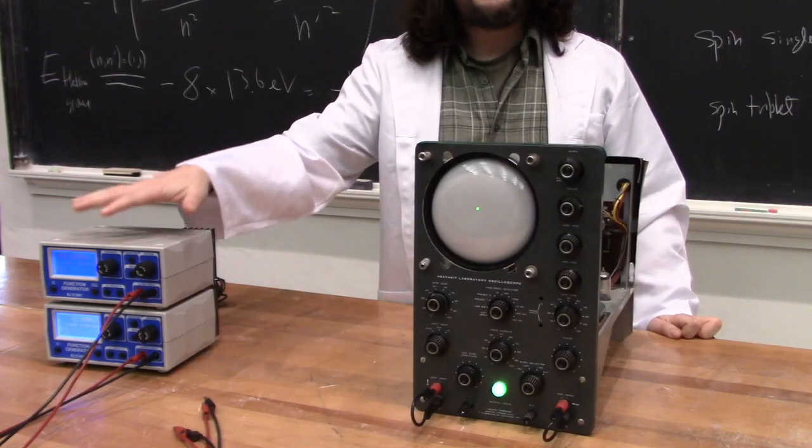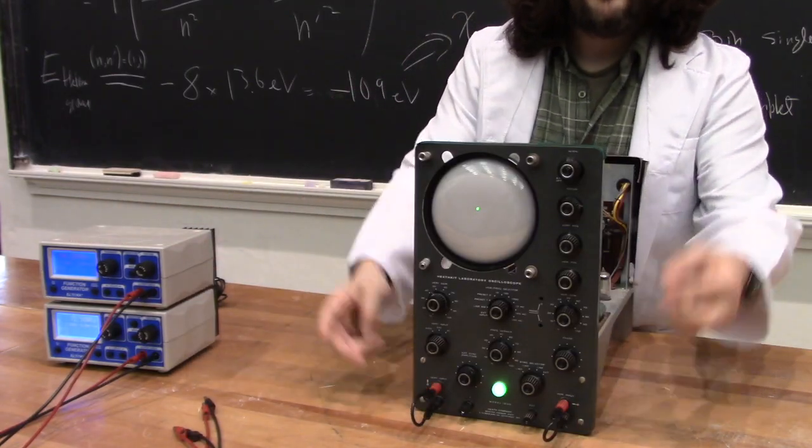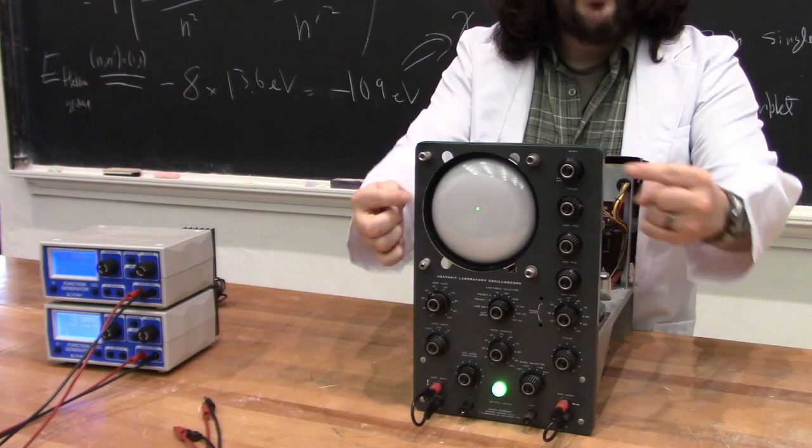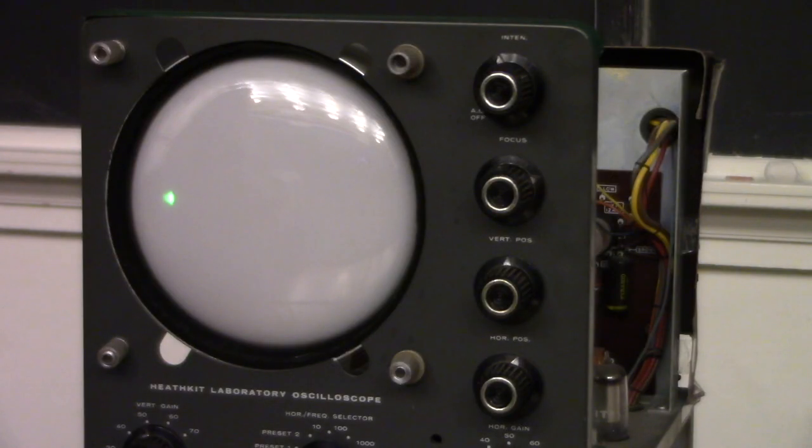Now I'll plug these signal generators into the oscilloscope's front panel, so we can control the electron beam directly. I can tell the beam to sweep back and forth from left to right, or up and down, diagonally, in a circle, or in any number of interesting patterns.